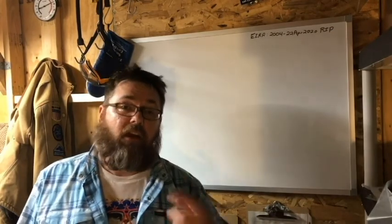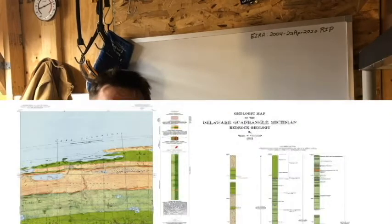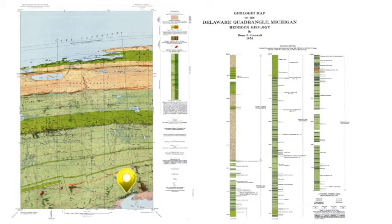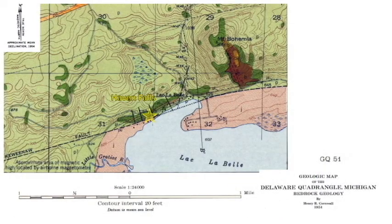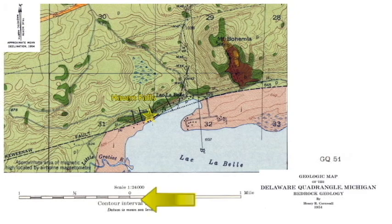Haven Falls is located within the Delaware seven and a half minute quad, just like the Delaware Mine is in the southeast part. Here is a zoom in of that map, and here are the yellow stars — you'd see it labeled Haven Falls. Some things are going to disappear off the map to make room for other things. You can see the north arrow in the upper left-hand corner. The scale on the bottom is in miles. The map was done in 1954, but one mile is about 1.62 kilometers. So that's the basic map.